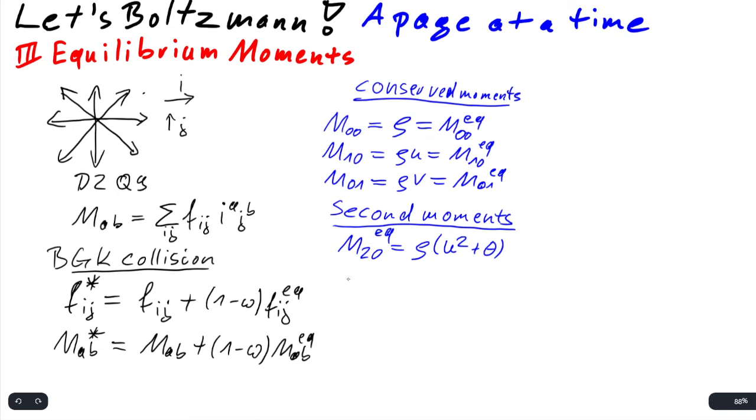times u squared plus theta, where theta is a constant related to the temperature. And M_0,2 equilibrium is equal to rho v squared plus the same theta.